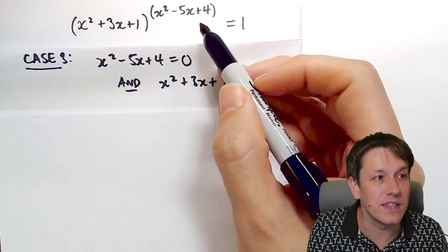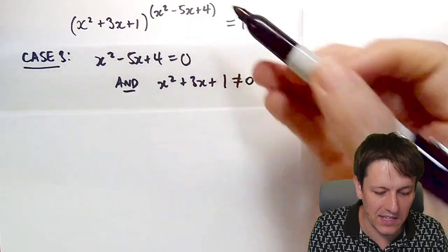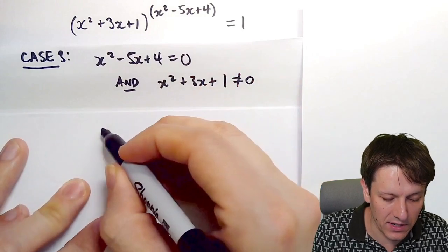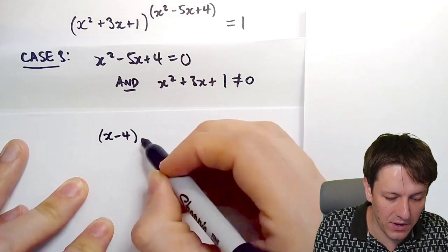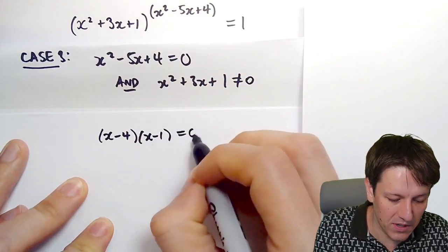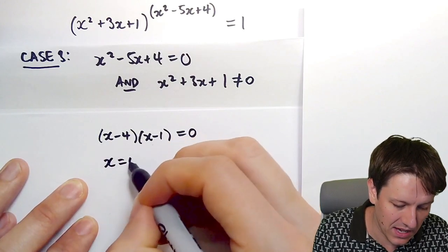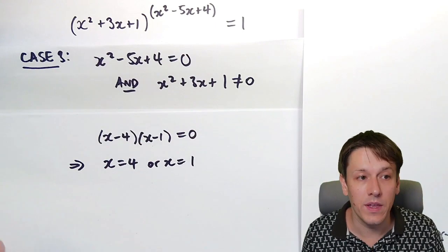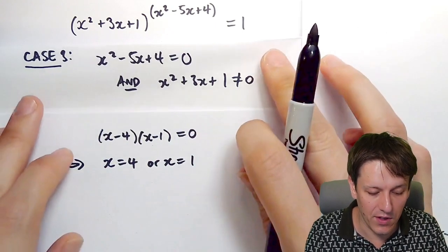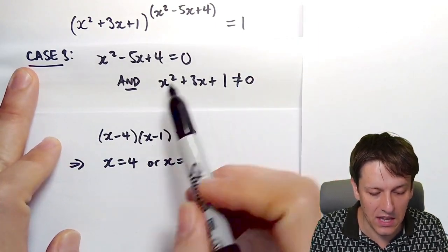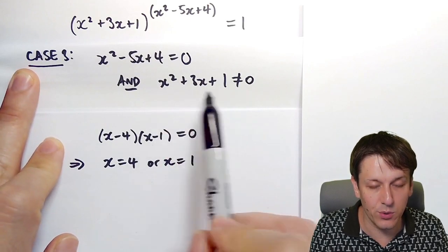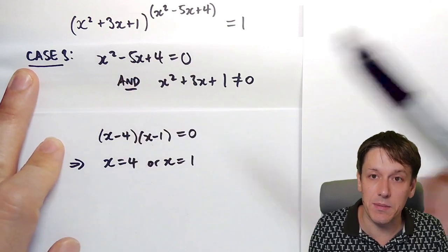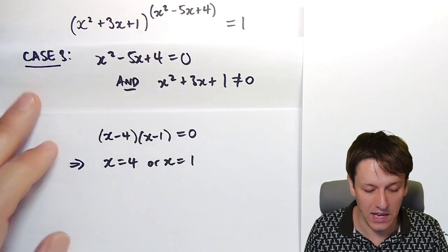In the final case, we make the power x squared minus 5x plus 4 equal to 0. Factorizing gives (x minus 4)(x minus 1) equals 0, so x equals 4 or x equals 1. We check that x squared plus 3x plus 1 is not zero for these values — both are positive, so all terms are positive, giving a positive number raised to the power of 0, which certainly equals 1.